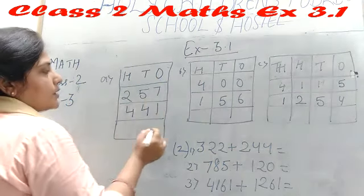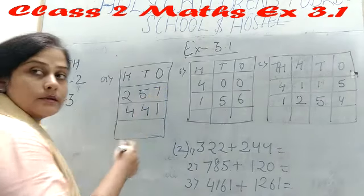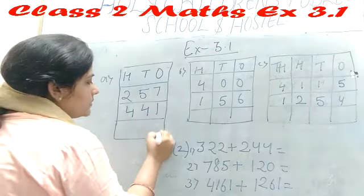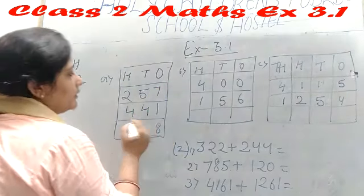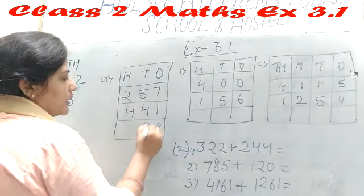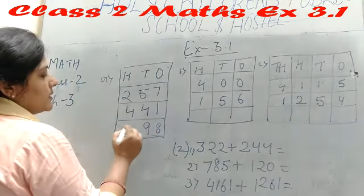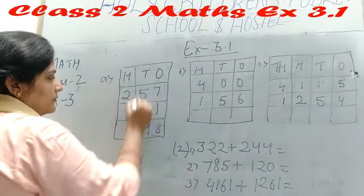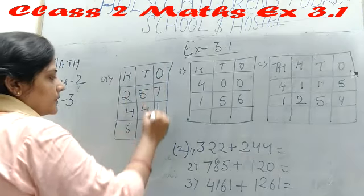First we can write ones digit. 7 plus 1 equals 8. 5 plus 4 equals 9. And 2 plus 4 equals 6. Clear this trend?